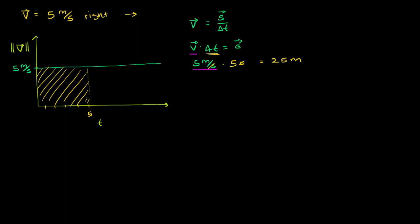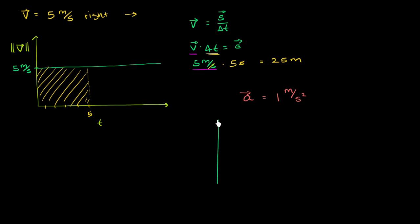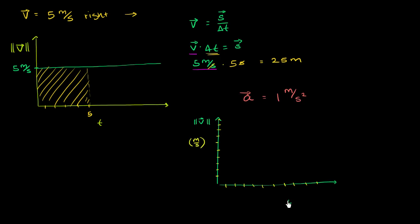So let me draw a slightly different situation where the velocity is changing — a situation where you have a constant acceleration. The acceleration over here is going to be 1 meter per second per second, so 1 meter per second squared. Let me draw the same type of graph, though it's going to look a little different now. This is my velocity axis — I'm just going to draw the magnitude of the velocity — and this right over here is my time axis. Let me mark some stuff off: 1, 2, 3, 4, 5, 6, 7, 8, 9, 10 on each axis.